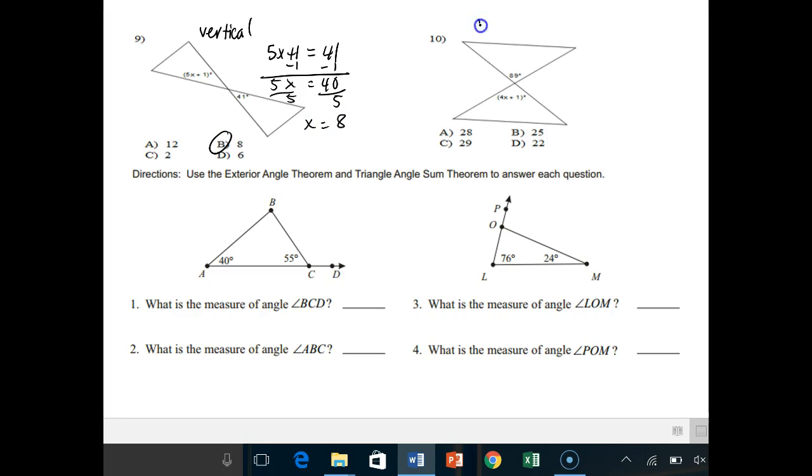Number 10 also has a vertical relationship. Now, use the exterior angle theorem. For us this will be supplementary theorem. And the triangle angle sum, meaning all angles in triangle add up to 180 degrees, to answer each question. So find the measure of BCD. Here's BCD. They want this measure right here. Well,